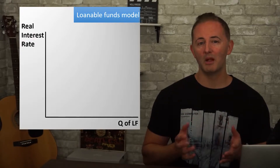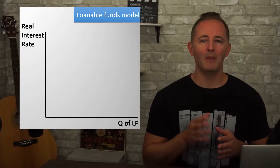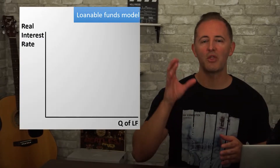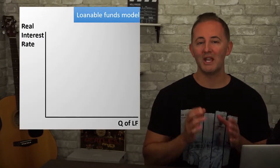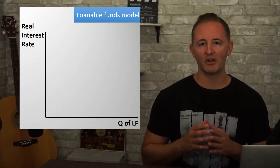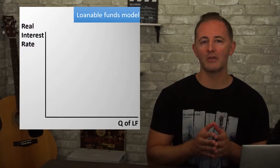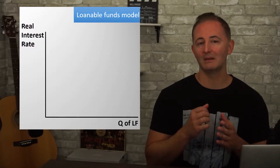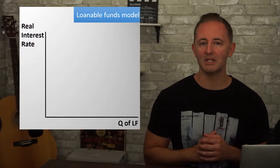Our money market model shows the nominal interest rate, but this one shows the real interest rate, which is adjusted for inflation and is therefore the interest rate that borrowers and lenders use to make their decisions.